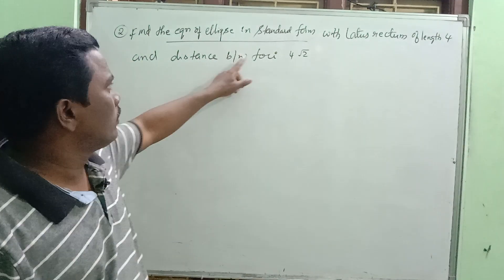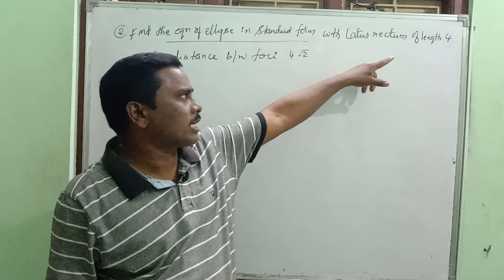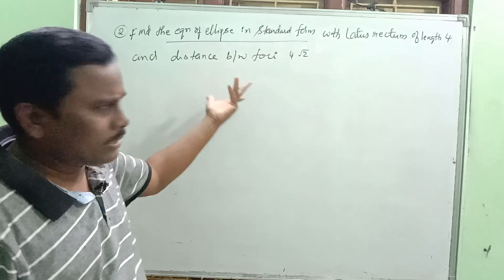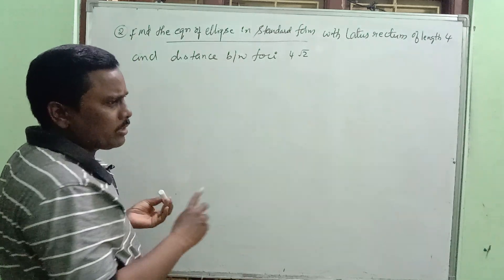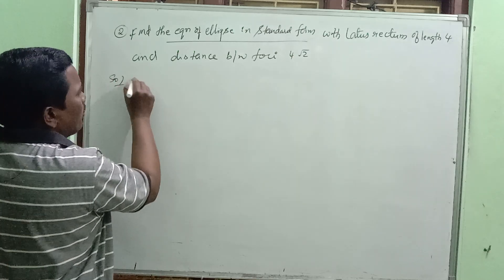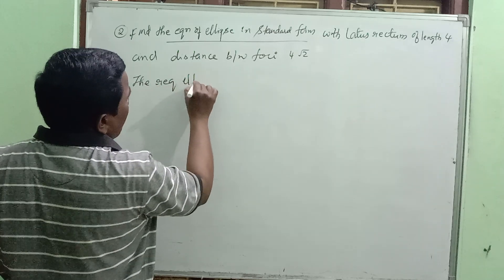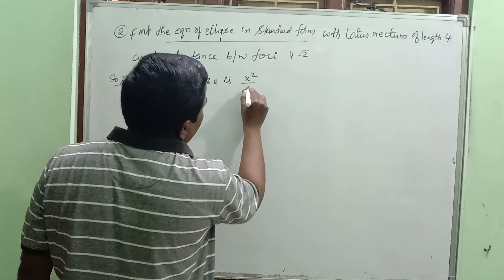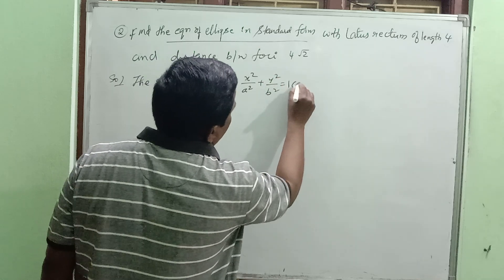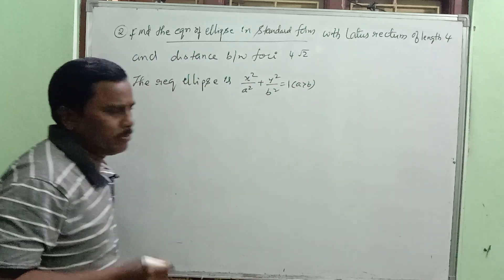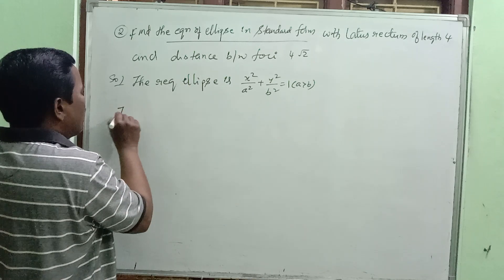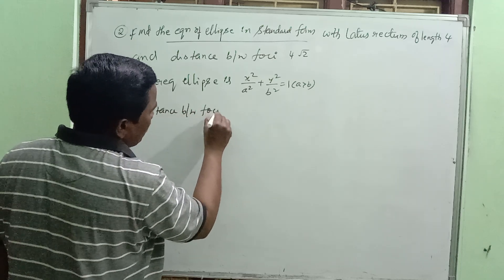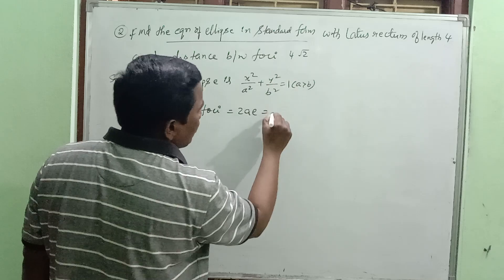Third question: Find the equation of the ellipse in standard form with latus rectum of length 4 and distance between the foci = 4√2. The required ellipse is x²/a² + y²/b² = 1. Distance between foci = 2ae = 4√2, so ae = 2√2.